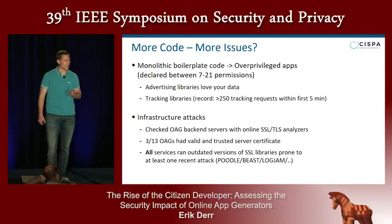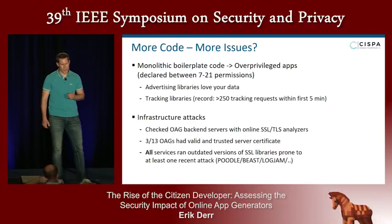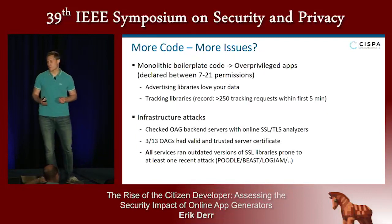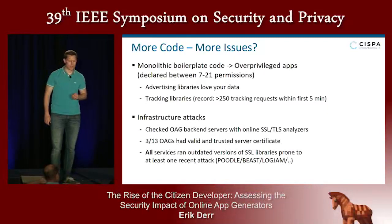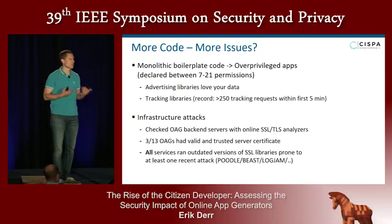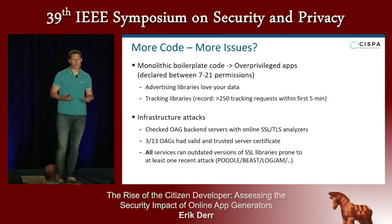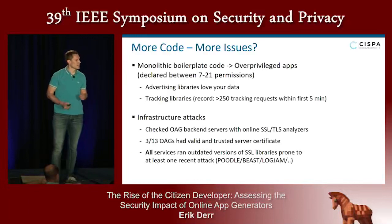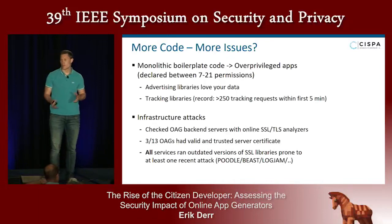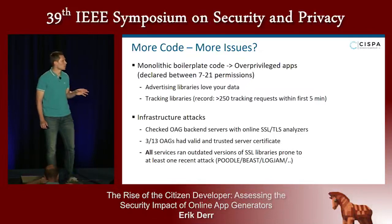We had one particularly worrisome case: one online app generator included different tracking libraries that combined issued more than 250 web requests within the first five minutes of execution. We also checked for infrastructure attacks, since many app generators bind customers to their backend servers — for instance, through modules for user logins or forms to submit user data. We checked backend servers against online SSL/TLS analyzers and found only three services with a valid, trusted server certificate. All of them ran outdated SSL library versions prone to attacks like Poodle, Beast, Freak, DROWN, and others.